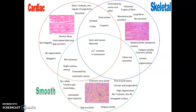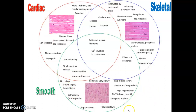Smooth muscle has small fusiform cells. It can be involuntary and autorhythmic, just like cardiac muscle. Smooth muscle does not have striations, but it has the same actin and myosin. Make your own Venn diagram from the lecture to identify the shared characteristics.